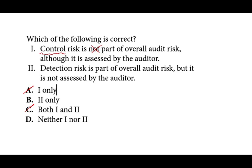Now, what is control risk? Control risk is the risk of a material misstatement found in the financial statements arising because internal controls are not working properly. Organizations should have good internal controls to prevent material fraud and errors. Auditors assess control risk as high, medium, or low. High control risk means the company's controls are not good. We assess it to help us plan the audit, but there's nothing we can do to change it.